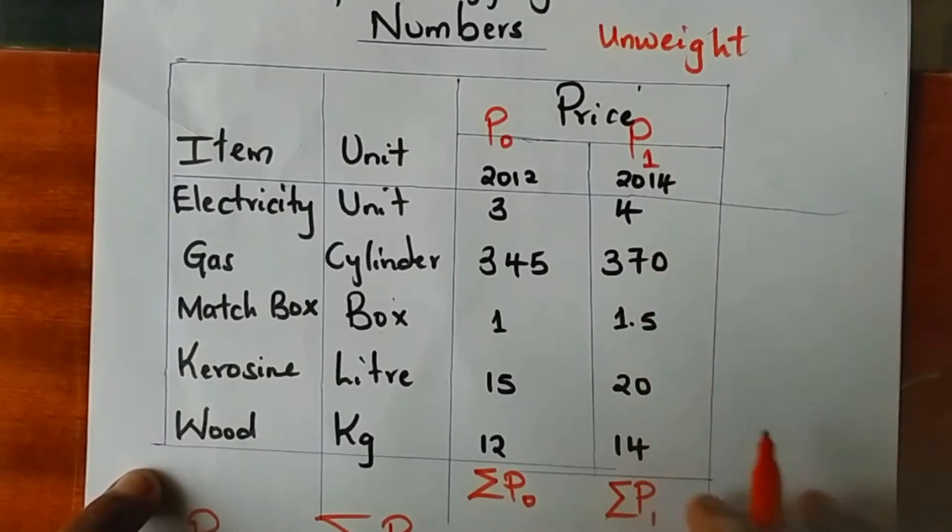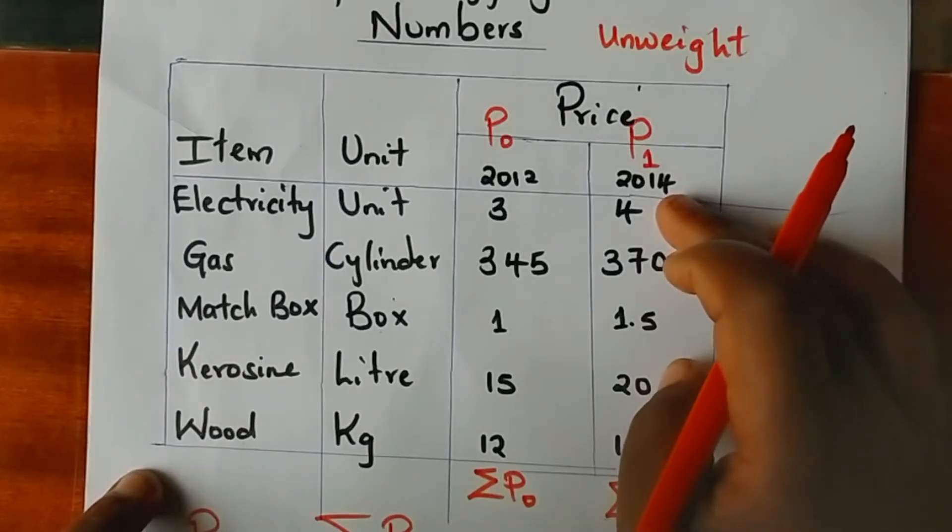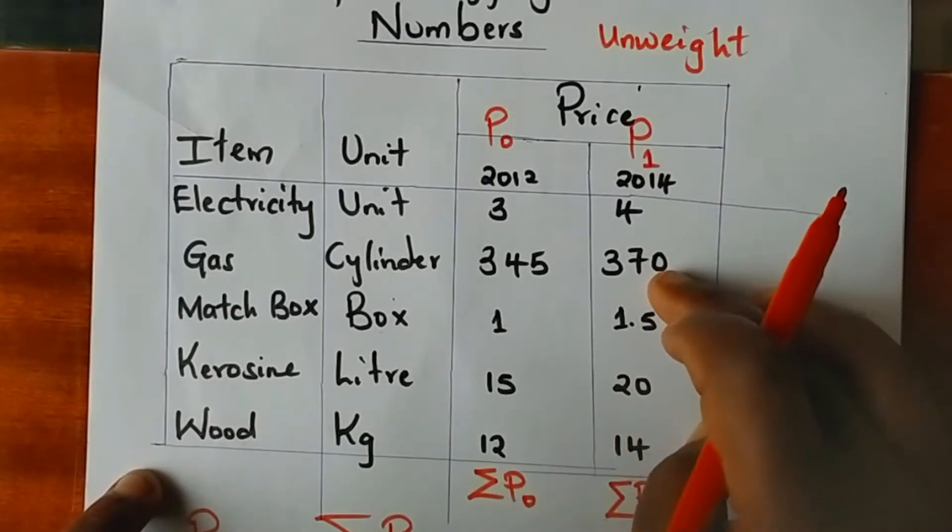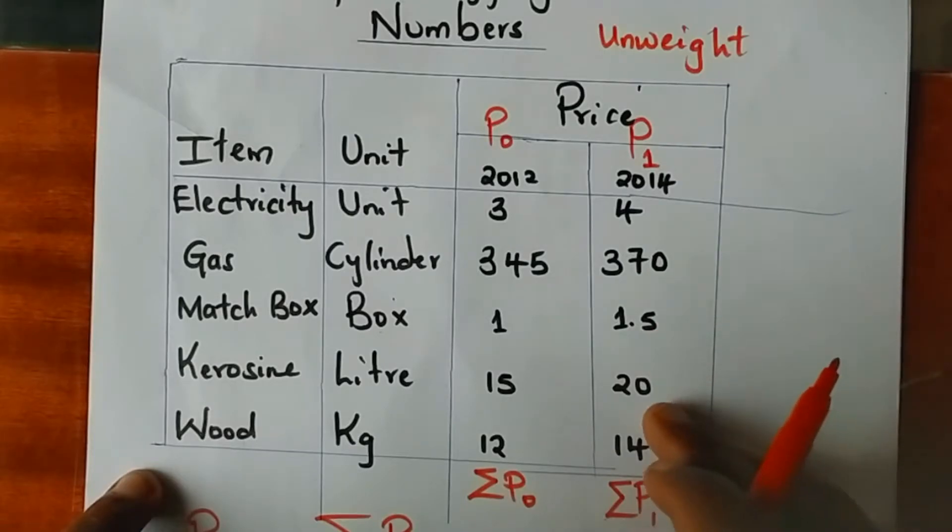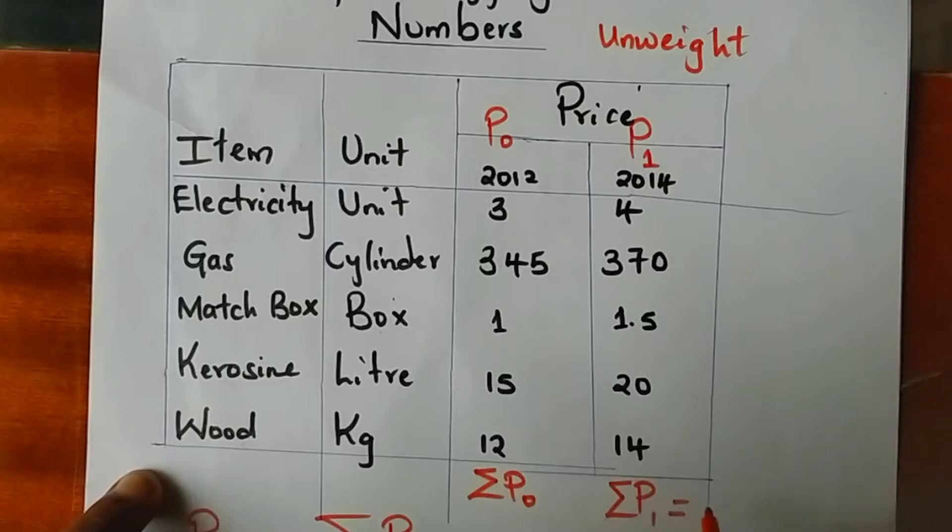So let's go ahead and sum all the values of the current year. Add 4 to 370 to 1.5 to 20 and 14, and the summation in this case will be 409.5. Doing the same but now for the base year, the summation of these values is 376.